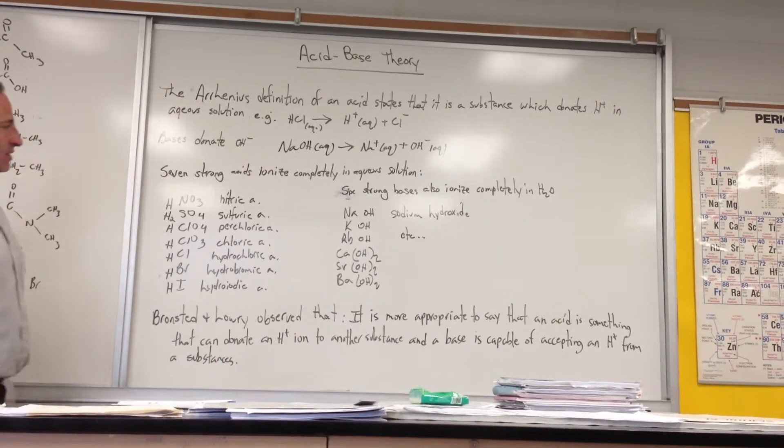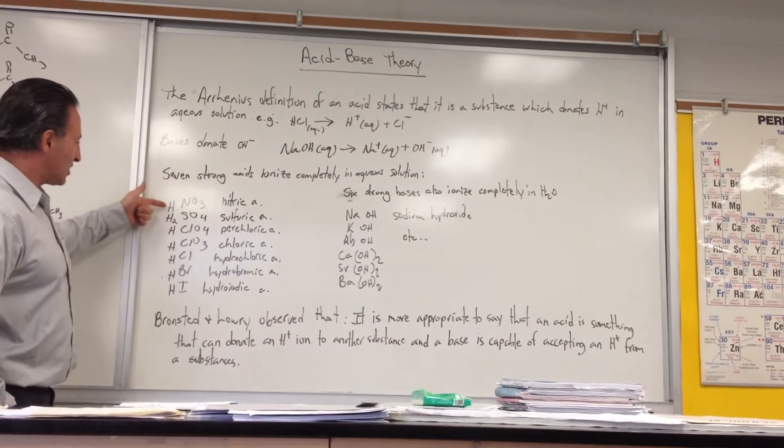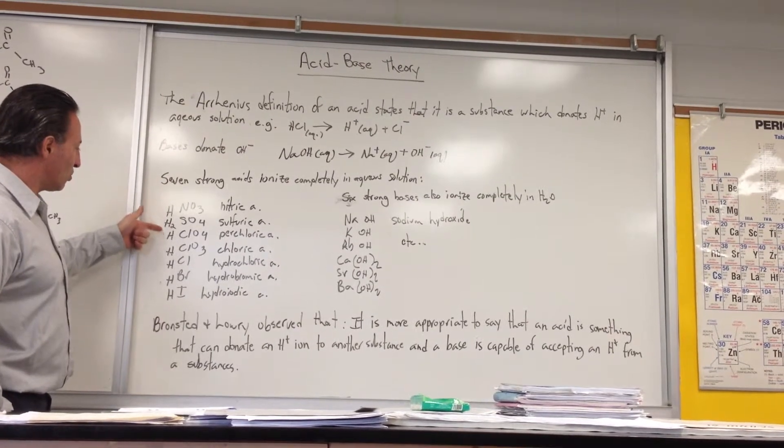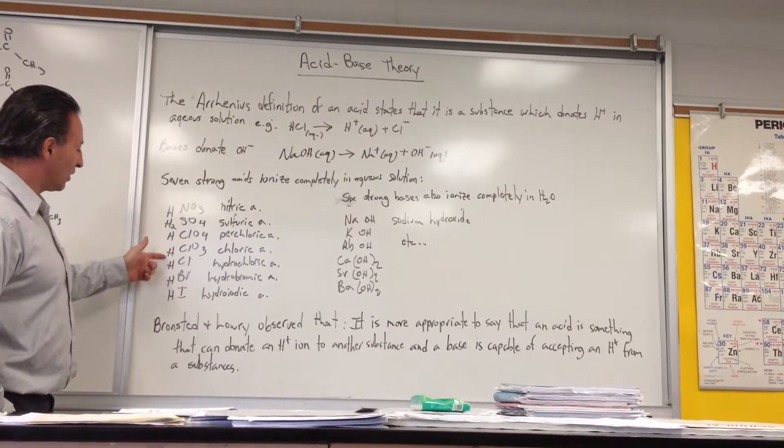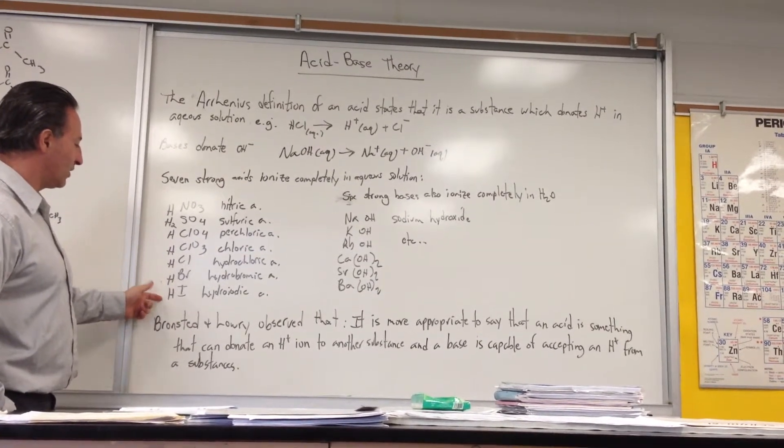There are seven strong acids which we can memorize using the mnemonic: nitric, sulfuric, chlorous, chloric, hydrochloric, hydrobromic, and hydroiodic acid.